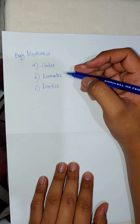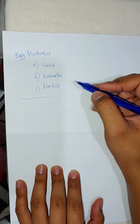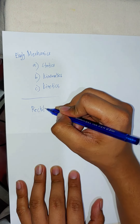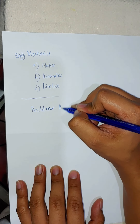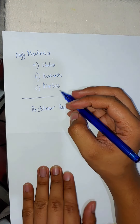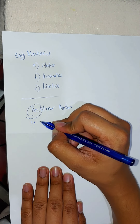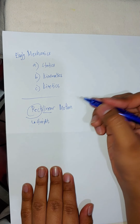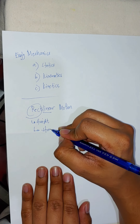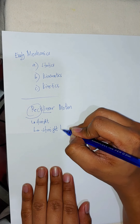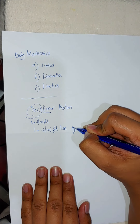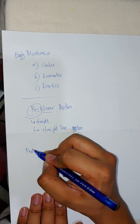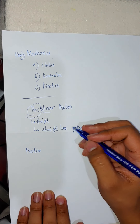We discussed rectilinear motion. When we say rectilinear motion, it is a motion along a straight line. 'Recti' means straight, and 'linear' means line, so rectilinear motion is motion in a straight line, or straight line motion.